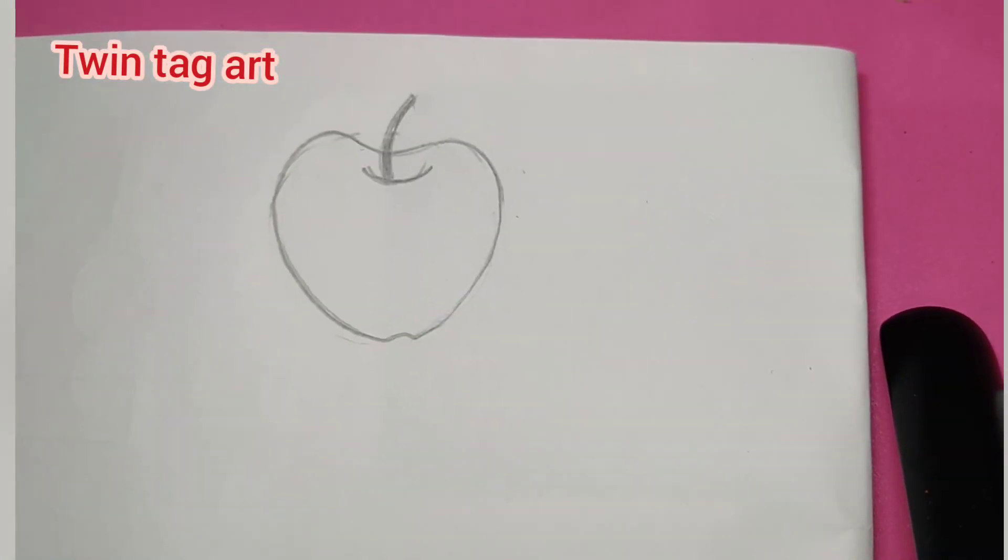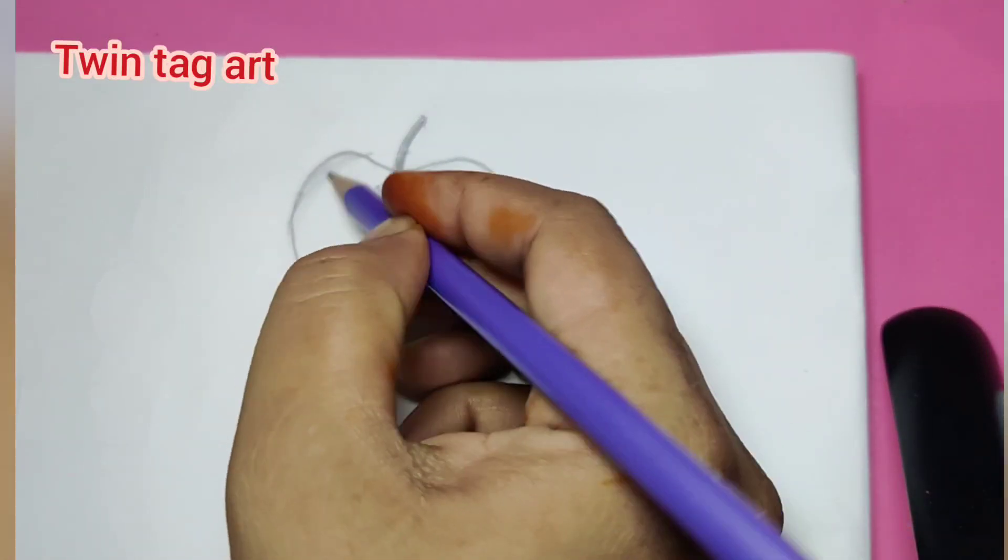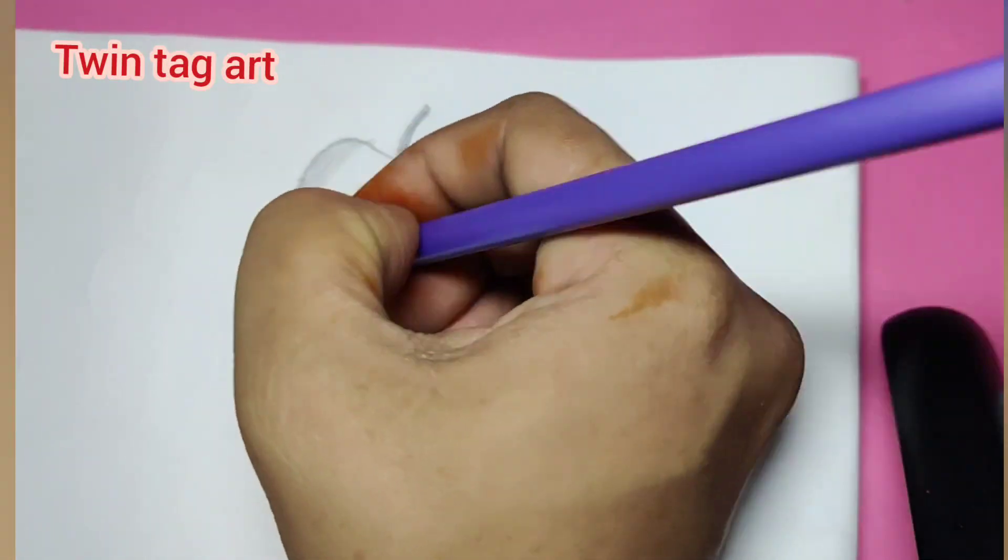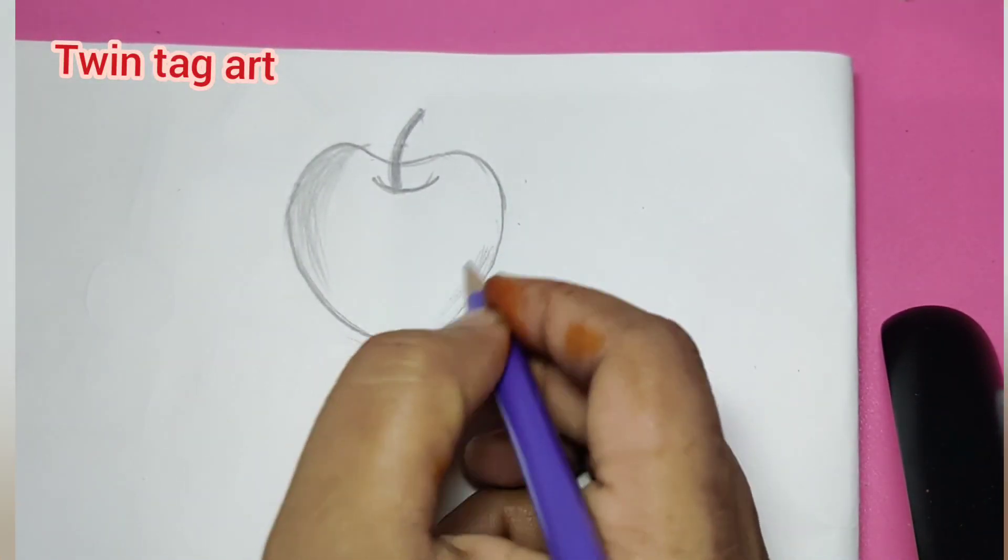So we have to draw a circle, then add details to it for a particular apple shape. As you can see, our drawing is almost complete. We will add some details and this apple sketch is ready.